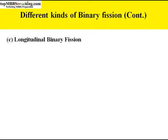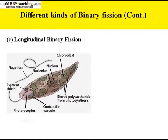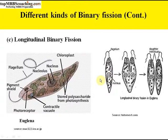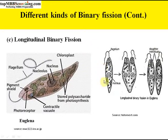Next is longitudinal binary fission. In longitudinal binary fission, the plane of cytoplasmic division coincides with the longitudinal axis of the individual. Then the fission is called longitudinal binary fission. This occurs in Euglena.